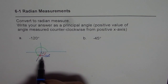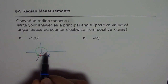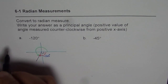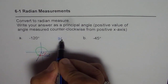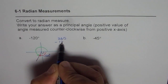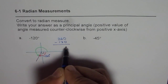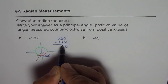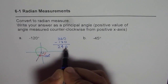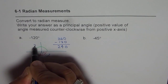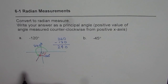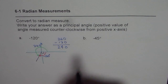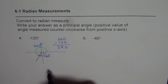If the angle is minus 120 degrees, the principal angle should be 360 minus 120, which gives us 240 degrees. So this angle is 240 degrees, and we convert that to radians. The conversion factor to radians is to multiply by π and divide by 180 degrees, since 180 degrees equals π radians.